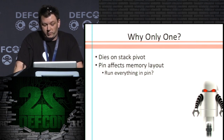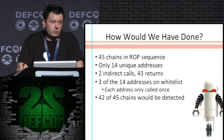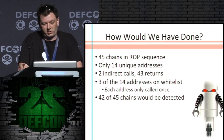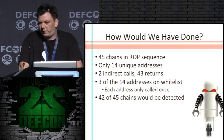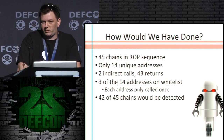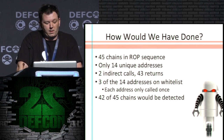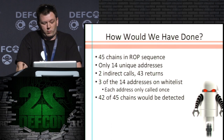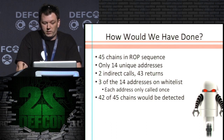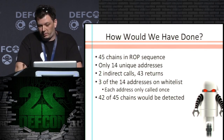On a side note, I don't know if we should run everything in PIN because, hey, I prevented it from happening. So let's make believe — how would we have done if this had actually executed completely? There are 45 chains in this ROP sequence and only 14 unique addresses. Two of these were indirect calls and 43 were returns. Three of the 14 addresses were on the whitelist. So we had a pretty good detection rate — overall we only missed three of the 45 chains.